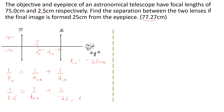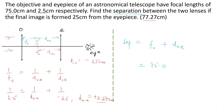Using a calculator, the object distance for the eyepiece works out to positive 2.27 centimeters. Referring back to the diagram, the distance from the objective lens to the intermediate image is F-objective, and the remaining distance is the object distance for the eyepiece. Therefore, the separation between the lenses is F-objective plus D-object-eyepiece, which is 75.0 plus 2.27, giving 77.27 centimeters.